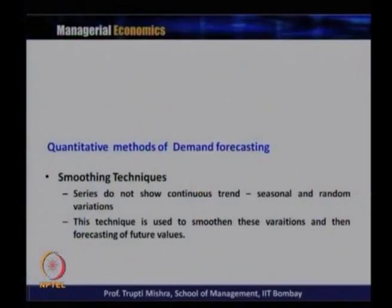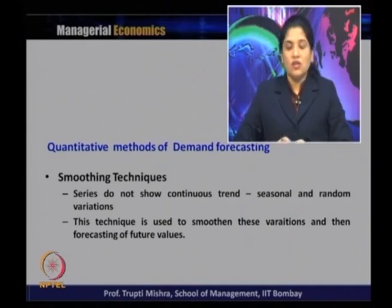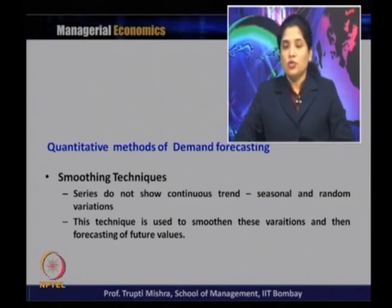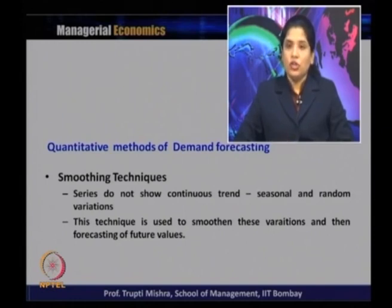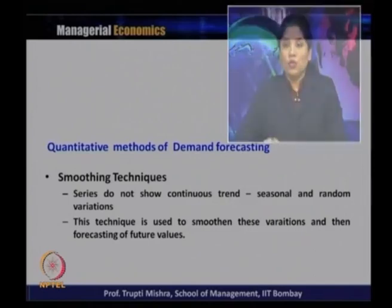Under the quantitative method, trend projection is one method where we use the graphical method, the least square method, or the ARIMA method to project the future trend or future demand. Then we come to the smoothing technique. Smoothing technique is required because series do not always show a continuous trend — there may be seasonal and random variation. The smoothing technique is used to smooth out this variation and then forecast the future value.